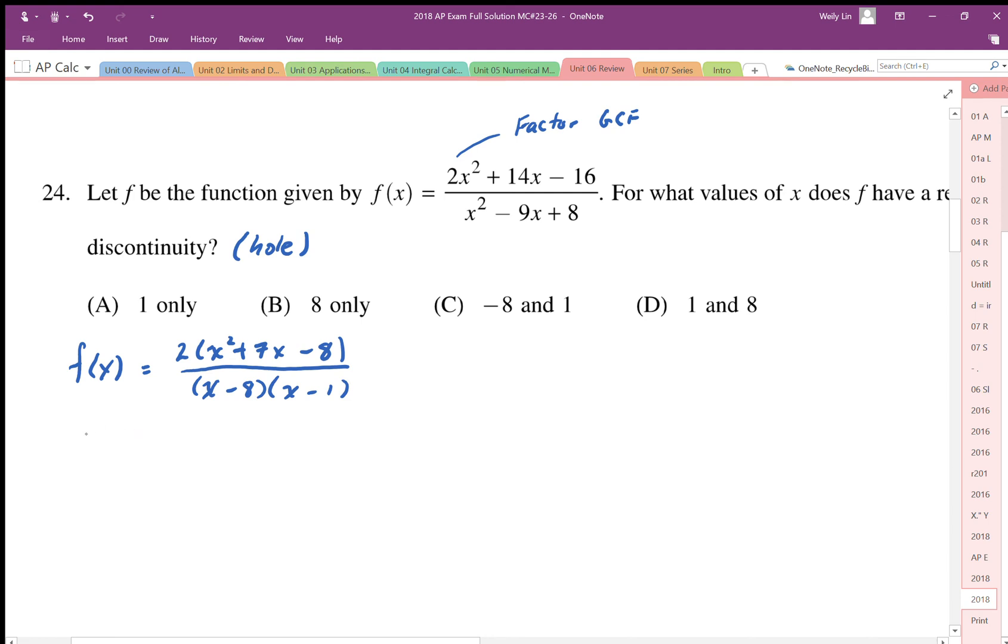Continuing this factor, we can see that there's going to be some common factors which will cancel out, and that's going to be our removable discontinuity. So we end up with, it has to be plus 8 because we get plus 7, and then x minus 1. And there's our removable discontinuity.